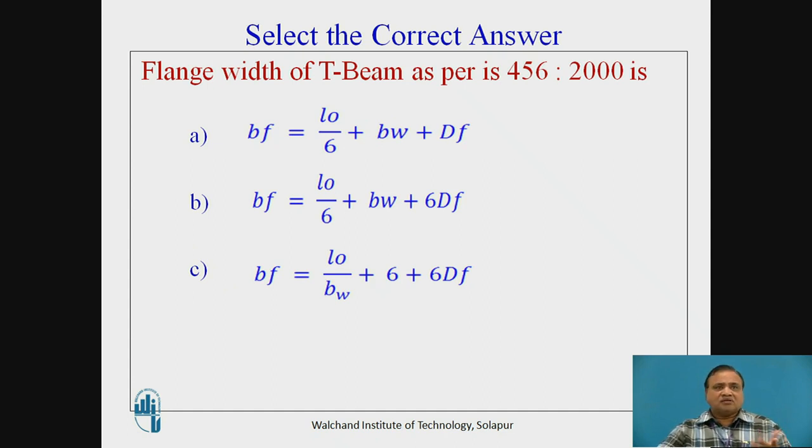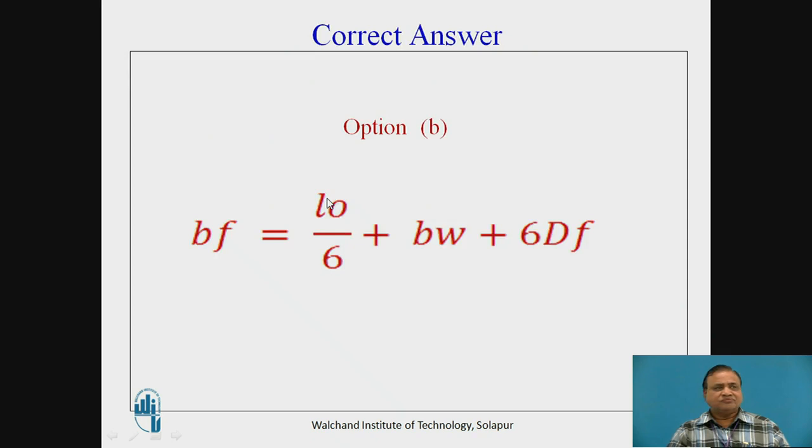Flange width of T-beam as per IS 456-2000. Can you guess what is the correct option? You already studied T-beam design, so can you just guess which is the correct option? Option B: Bf = L0/6 + Bw + 6Df. That is the right option.